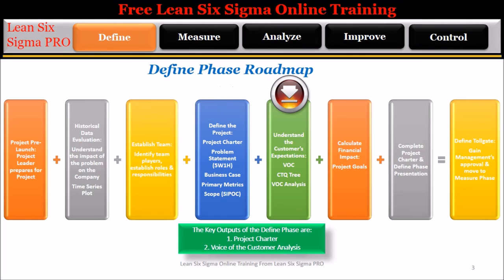Step 5: Understand the customer's expectations through a series of interviews. This is called the voice of the customer, or VOC. From the voice of the customer, the team will create the critical to quality tree and voice of the customer analysis. The voice of the customer analysis is a key output of this phase and will be used in the measure phase to create the data collection plan.